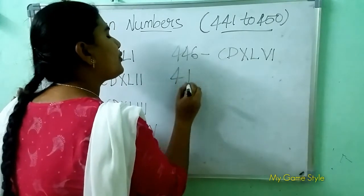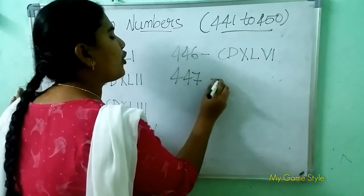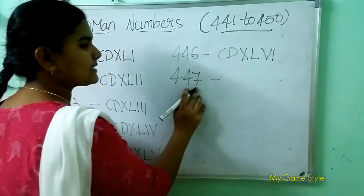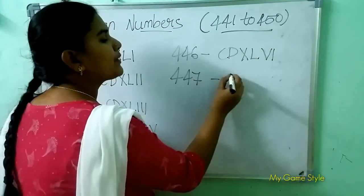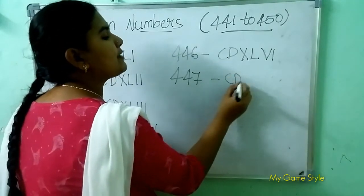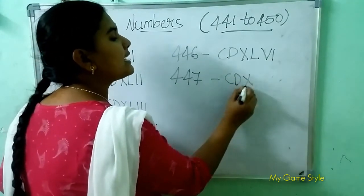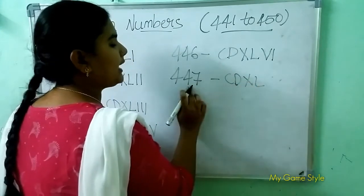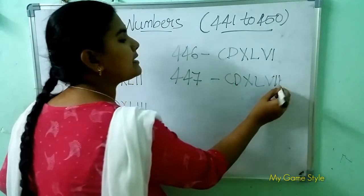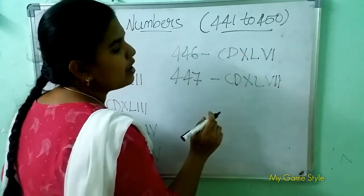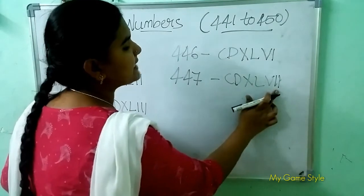Next, 447 means 447. So how to write 447 here? CD is 400, XL is 40, VII is 7. So this means 447.